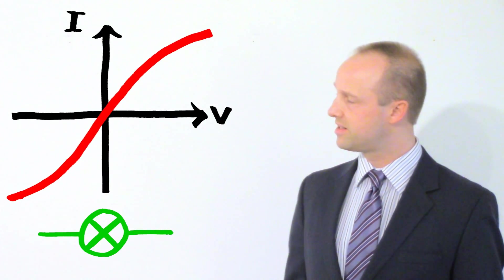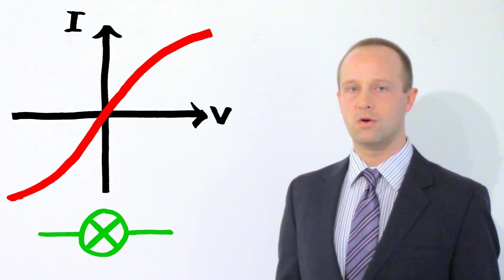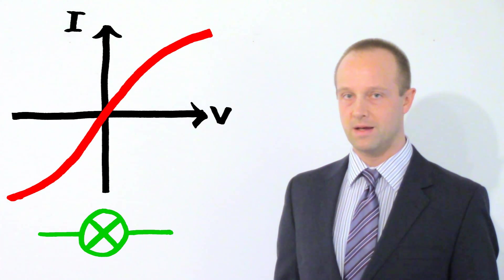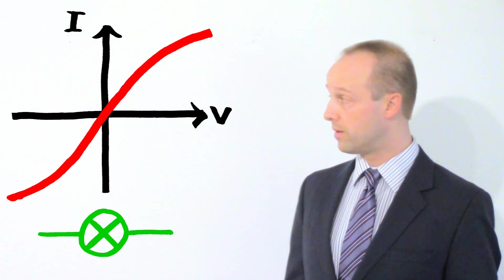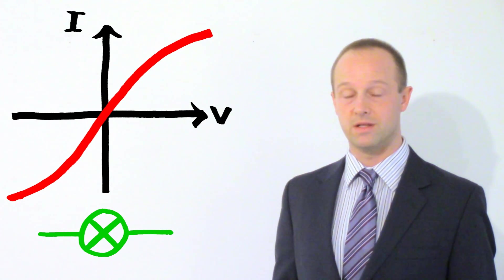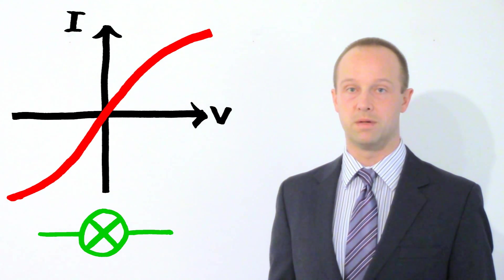With that in mind, let's return to our filament bulb. Now we get a similar graph for this, but not quite the same. Now at foundation tier, you don't need to worry about why we get this curve graph. You just need to know that this curve graph is the one for a filament bulb.